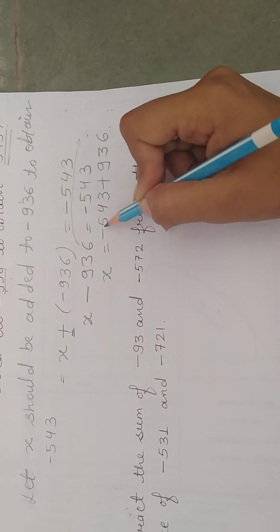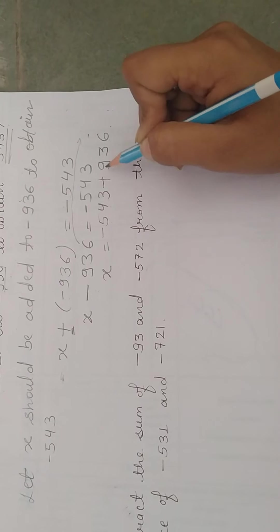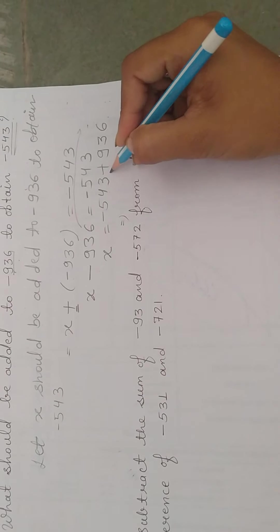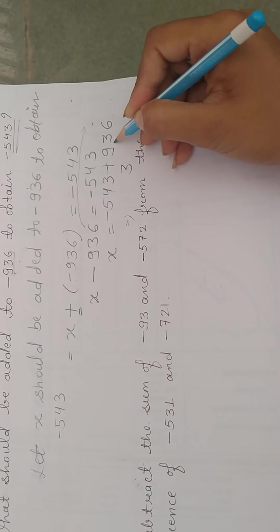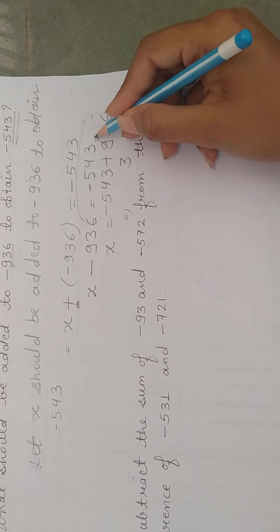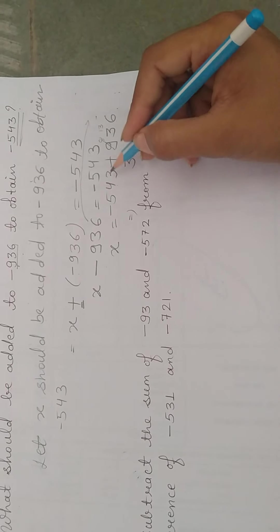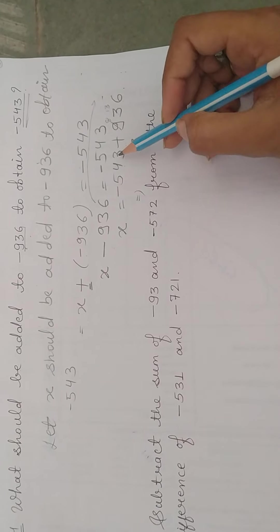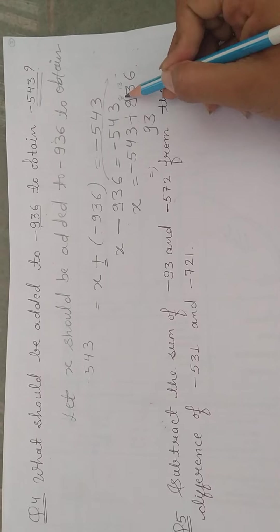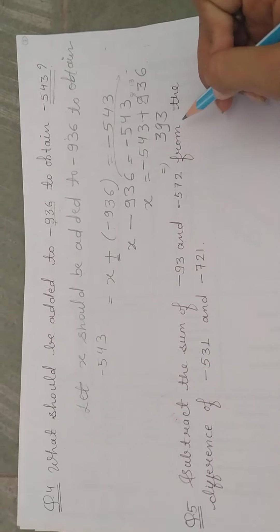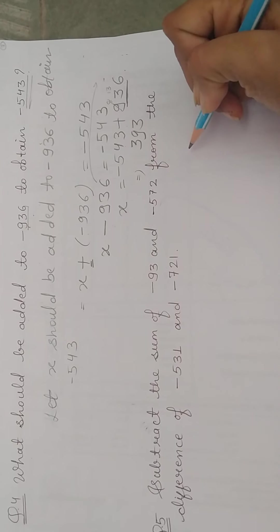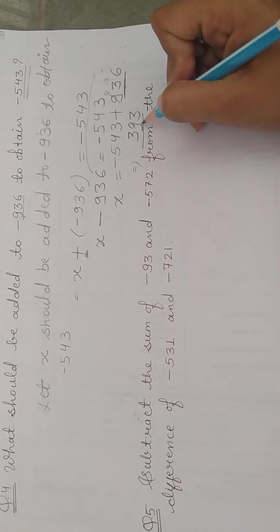यहां पर first integer minus 543 negative है और second integer plus 936 positive है — दोनों के signs opposite हैं, तो subtraction perform होगा। 6 minus 3 is 3; 3 minus 4 — cannot subtract, so we borrow. After borrowing: 13 minus 4 is 9; 8 minus 5 is 3. So the digits are 3, 9, 3.